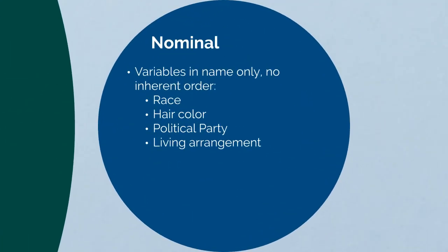Nominal variables are in name only. There is no inherent order or higher/lower ranking to these variables. Things like race, hair color — blonde, brunette, redhead — political party, your living arrangement: are you in an apartment or a home, do you rent or do you own? There is no inherent order of low, medium, high or more preferred to less preferred when you think about nominal variables.